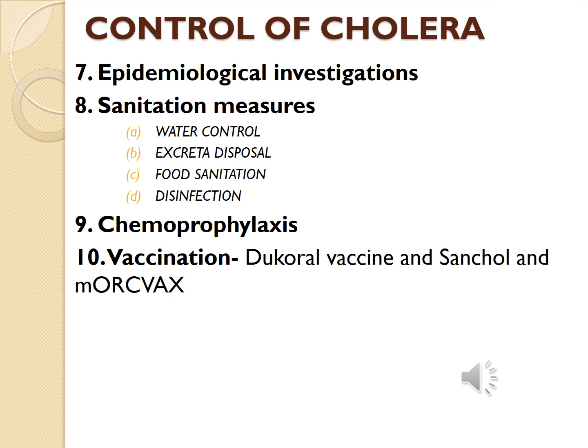Food sanitation is very important because food is an important vehicle of infection. Steps should be taken to improve food sanitation, particularly ensuring that food is sold under hygienic conditions and that food handlers receive health education. For disinfection, various methods can be adopted; the simple and most effective method is a coal tar disinfectant, and bleaching powder can also be used.